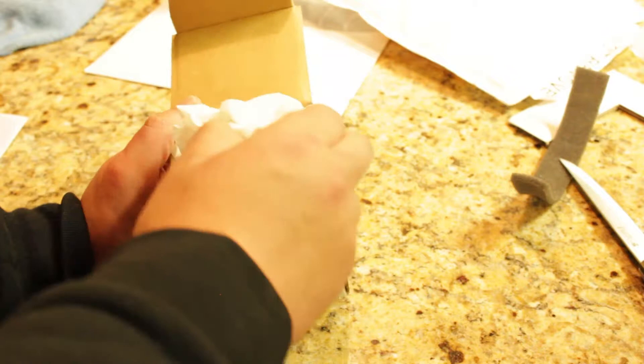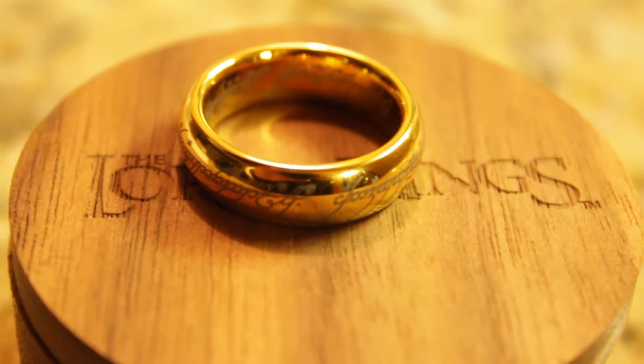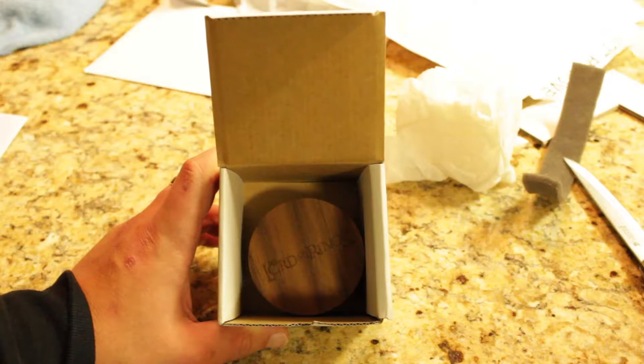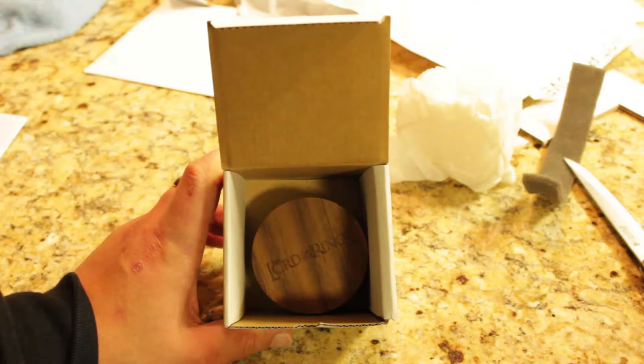Inside, as you can see, you get the Lord of the Rings One Ring. This has the Elvish runes, obviously, because no ring is complete without having the Elvish runes on it. They do sell the all gold-plated version without the Elvish runes, which I may get in the future just because it's more movie accurate.